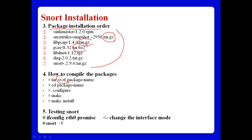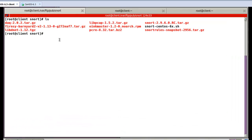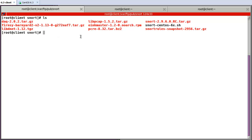After extracting the package, go inside the package directory, then run configure, make, and make install. Then we can install those packages. If successful in installing Snort, test it using ifconfig eth0 promisc to change the interface mode to promiscuous mode. After that, run snort -v, and this command will show the version of Snort you already installed.